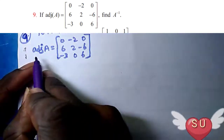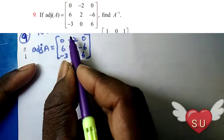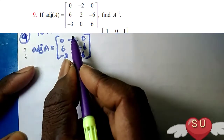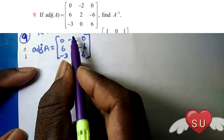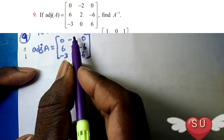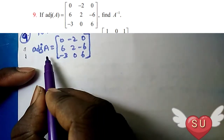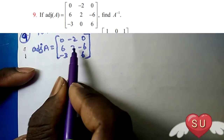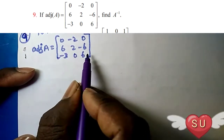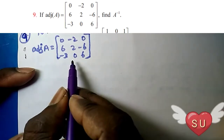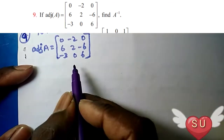So, adjoint A is equal to 3, and A inverse is going back to normal. Adjoint is equal to: 0, 0, minus 2, 0, 6, 2, minus 6, minus 3, 0, 6.